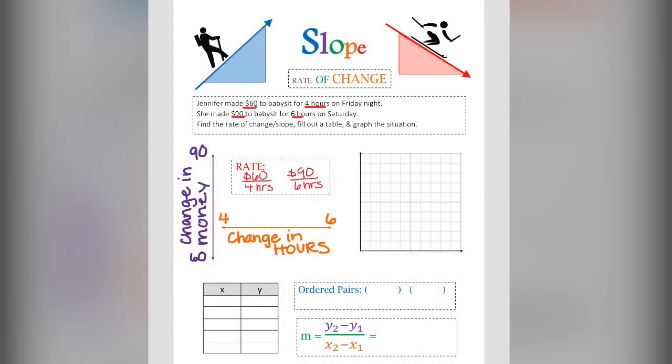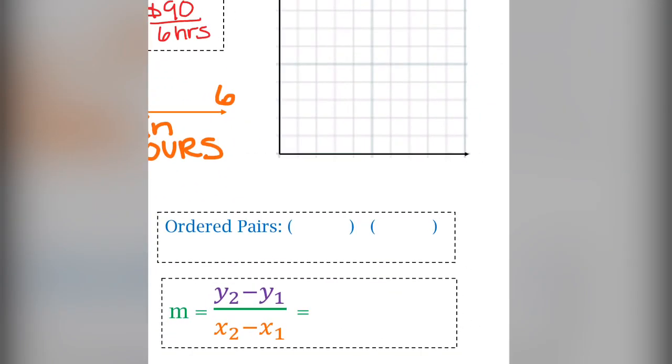Now we're going to transfer that into ordered pairs. The ordered pairs were 4 and 60, and 6 and 90. We know ordered pairs mean x, y. And we can label the first set the ones, and the second set twos. Because now we can take the slope formula to find the actual slope.